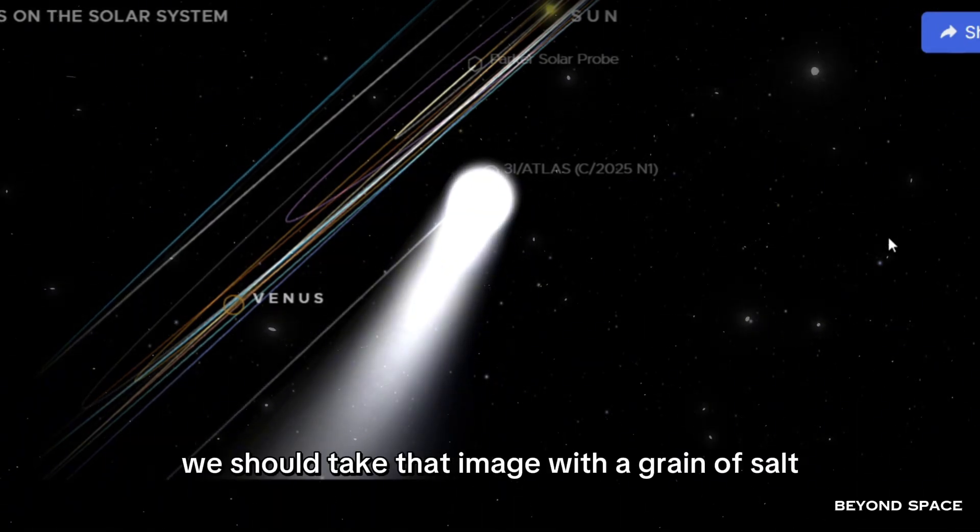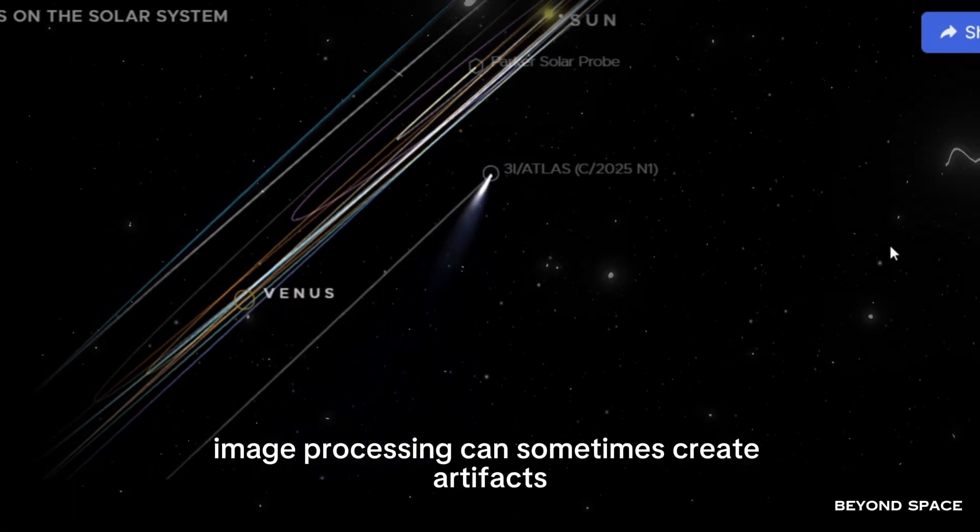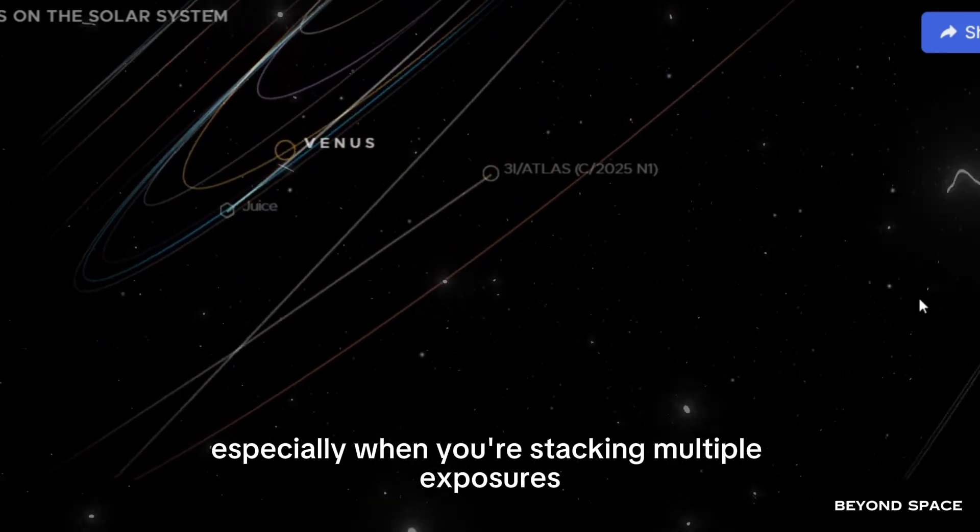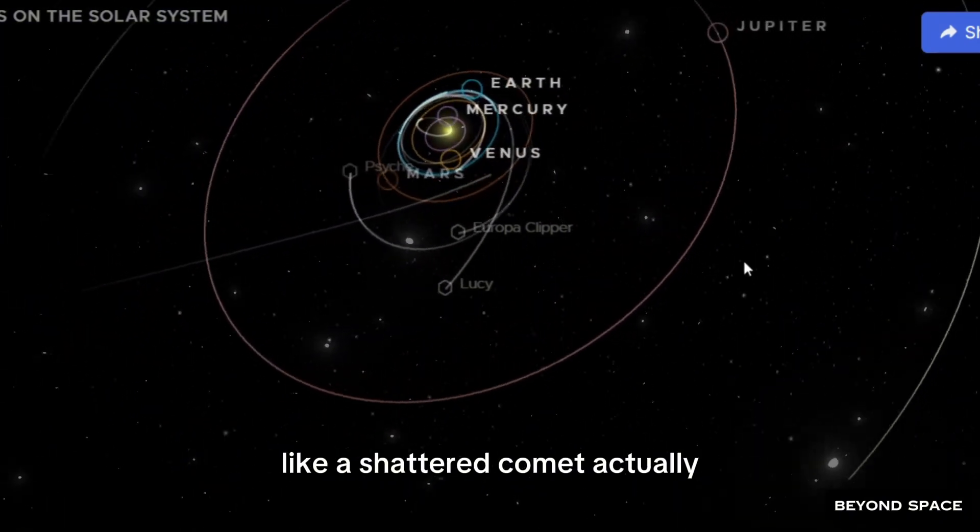Now, fair warning, we should take that image with a grain of salt. Image processing can sometimes create artifacts, especially when you're stacking multiple exposures. But even accounting for that, this observation doesn't show anything like a shattered comet.